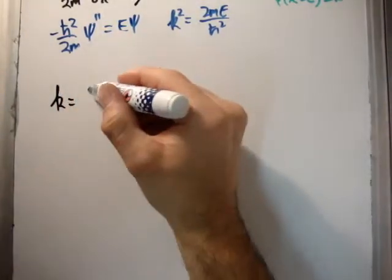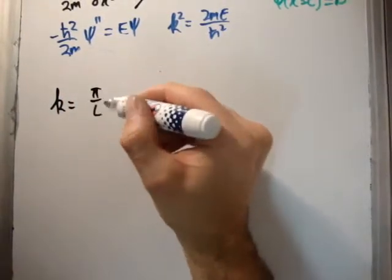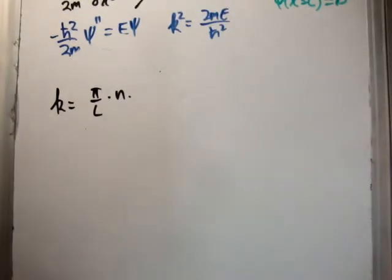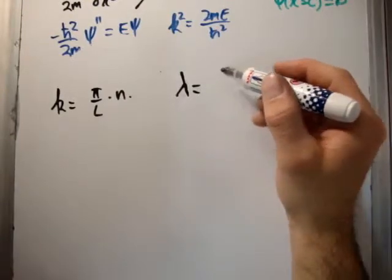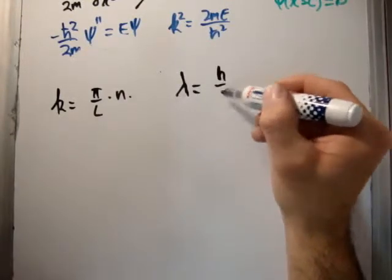We know that k is equal to pi over L times n in one dimension. But I want to put it in terms of the wavelength. So by the de Broglie relationship we know that it's h over p like that.